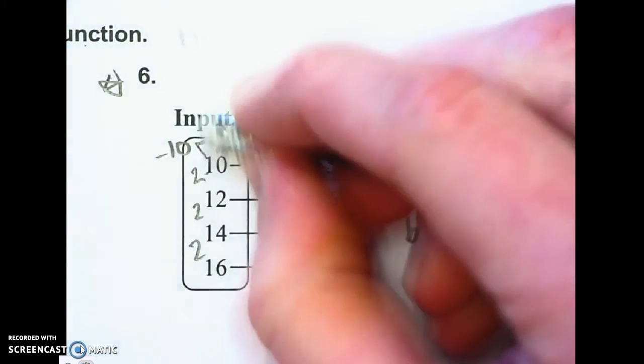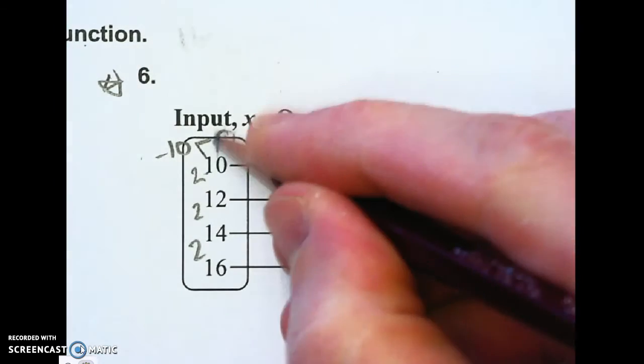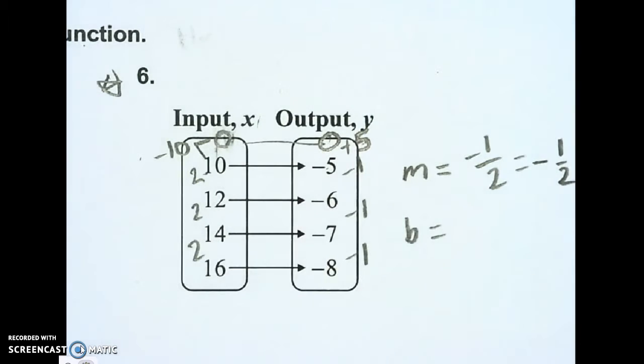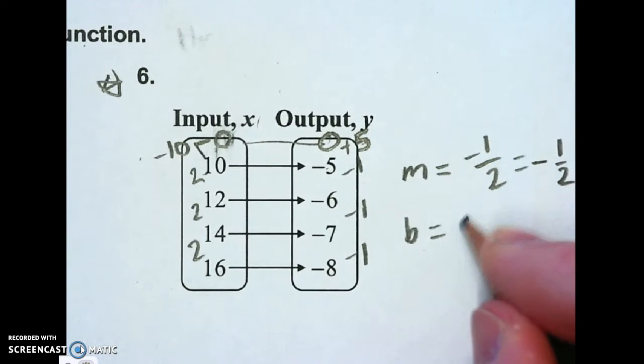If I wrote the wrong number here, this should be 0 right here too. So my y-intercept is 0.